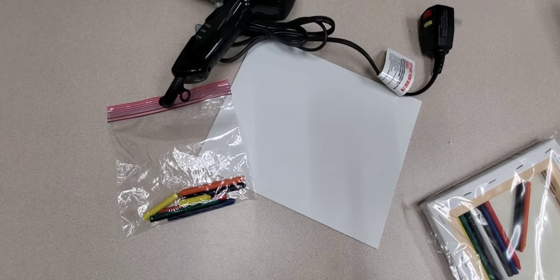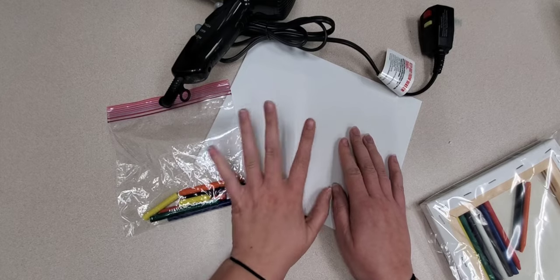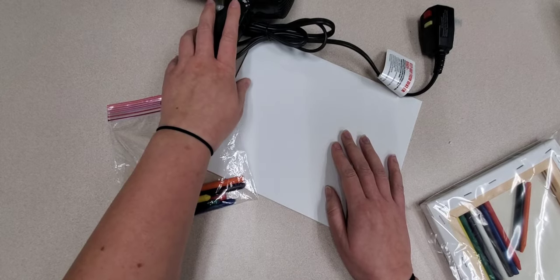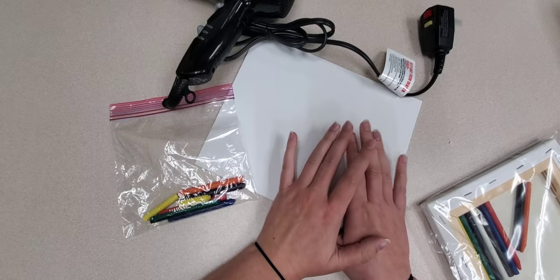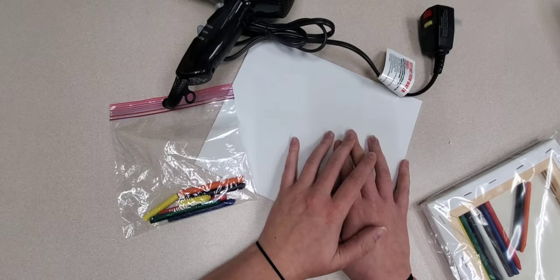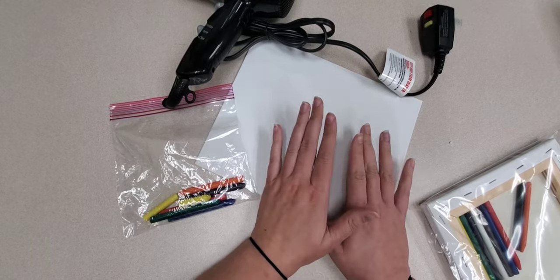Alright, so for this project you're going to need a canvas board, your crayons, and a hairdryer. Super simple. You can also use acrylic paint for a little bit of the ending part if you wanted to, but we're definitely not at that step yet.